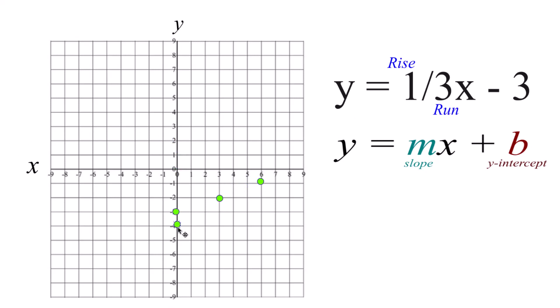Could go in the opposite direction, go down 1, and then to the left, 1, 2, 3. Down 1, to the left, 1, 2, 3. And those points, they're on our graph as well. They're right there on the line.